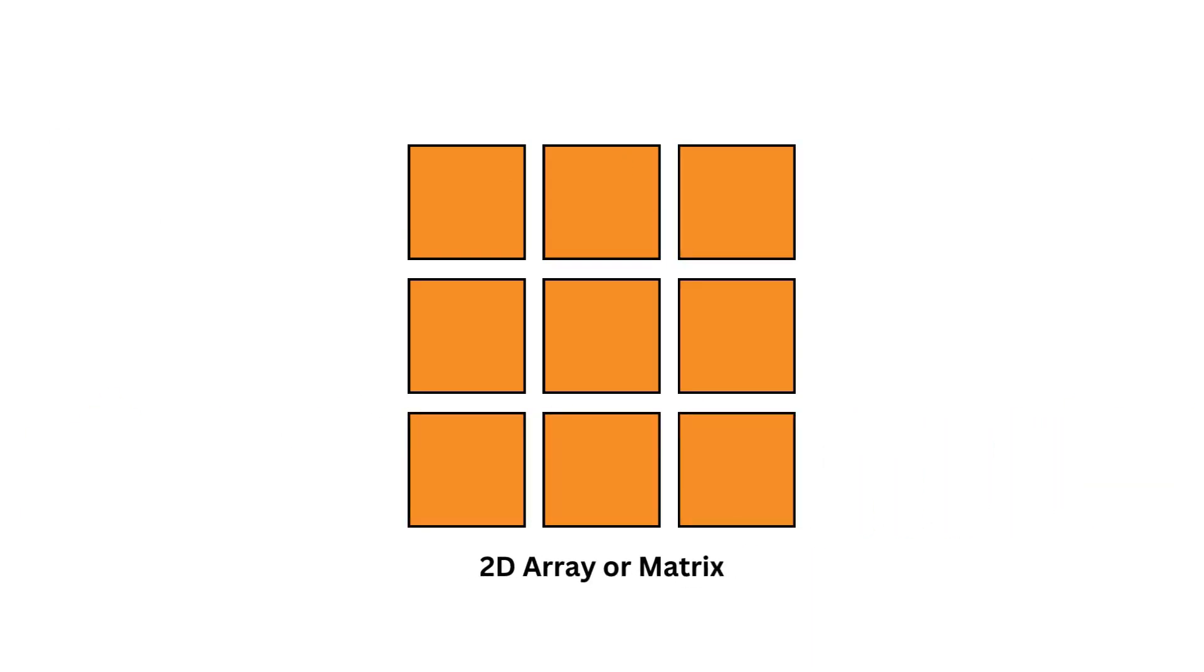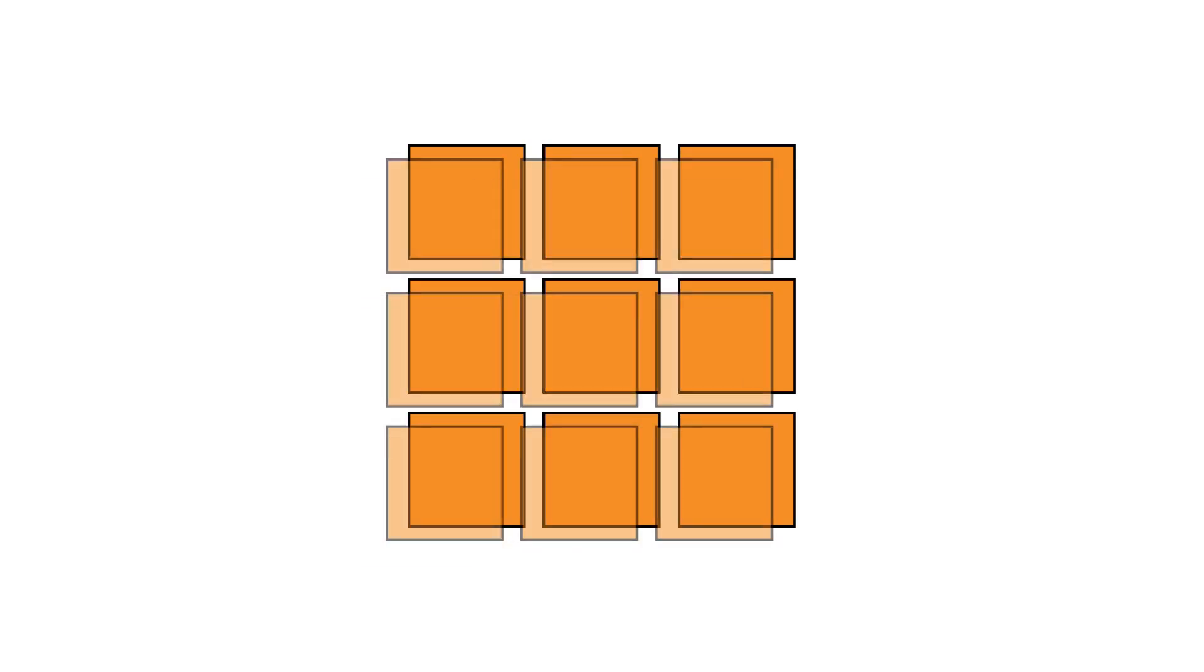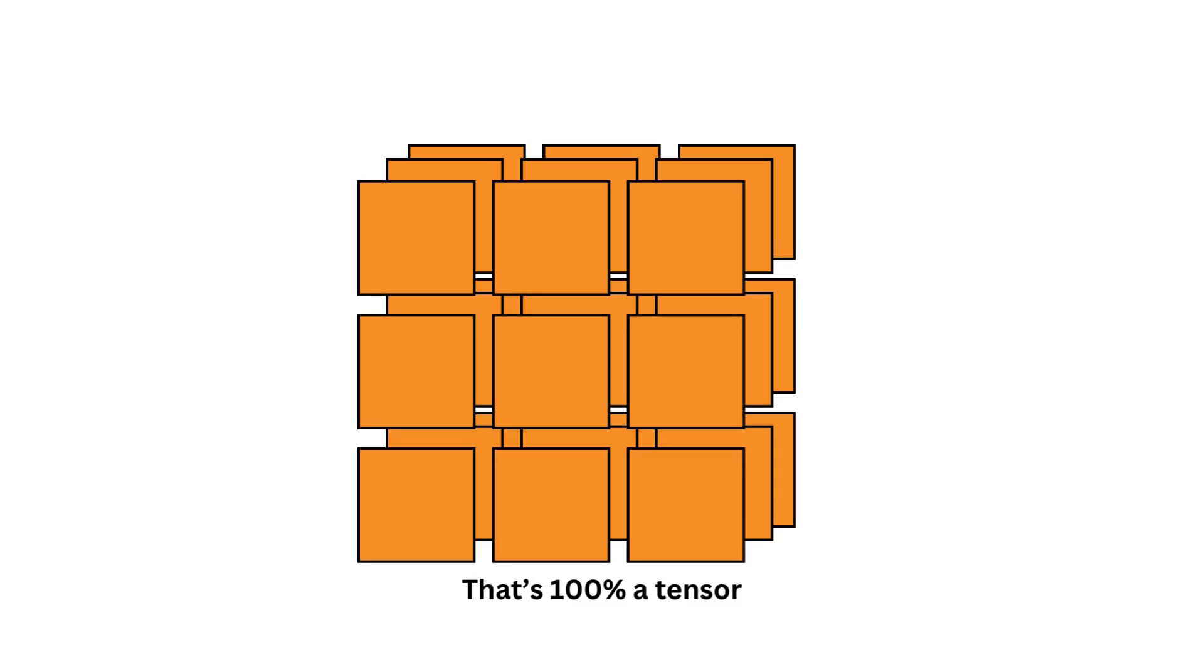If you stack some of these vectors or arrays together, you get a tensor with two dimensions. Yet, this is usually not called a tensor. This is called either a 2D array or a matrix. Only when we start stacking up a few layers of them in a third dimension that we officially call this a tensor.